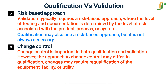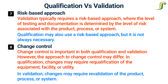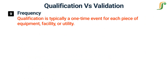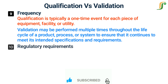Change control is important in both qualification and validation. However, the approach to change control may differ. In qualification, changes may require the re-qualification of the equipment, facility, or utility. In validation, changes may require re-validation of the product, process, or system. Qualification is typically a one-time event for each piece of equipment, facility, or utility. Validation may be performed multiple times throughout the life cycle of a product, process, or system to ensure that it continues to meet its intended specifications and requirements.